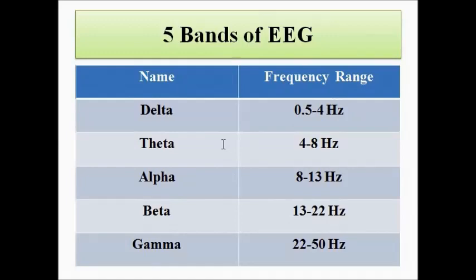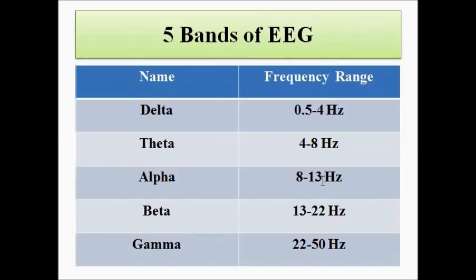The entire electroencephalogram frequency range is divided into five bands: delta, theta, alpha, beta, and gamma. Out of these, the alpha frequency range is of prime importance. It is generally considered the most important frequency band of EEG as it indicates the state of alertness of the brain. All other bands are also important, but the alpha band is of utmost importance and is utilized while providing anesthesia to patients when they undergo any surgical procedure. The EEG waveform is analyzed to understand the alertness or activity of the brain, and this alpha band gives us information about that state.